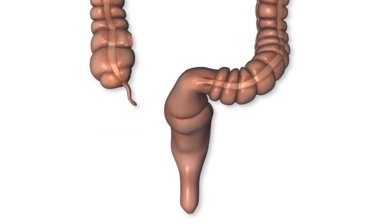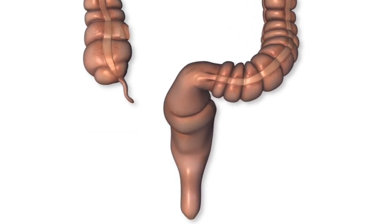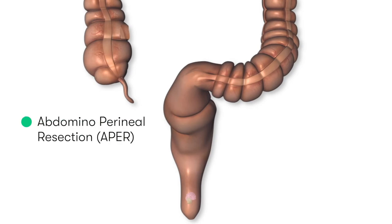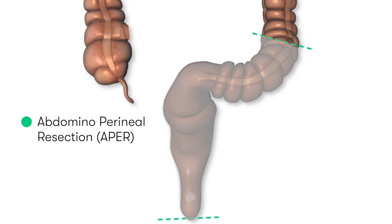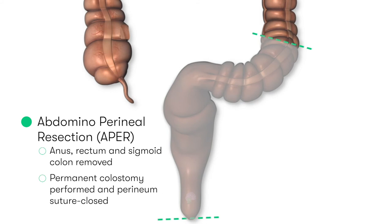In those patients who have an extremely low or distal rectal cancer, or who have an anal cancer, we'd perform an abdominal perineal resection, or APR, in which we'd remove the anus, the rectum, and the sigmoid colon, and we would then create a permanent colostomy as well as suture closure of the perineum.